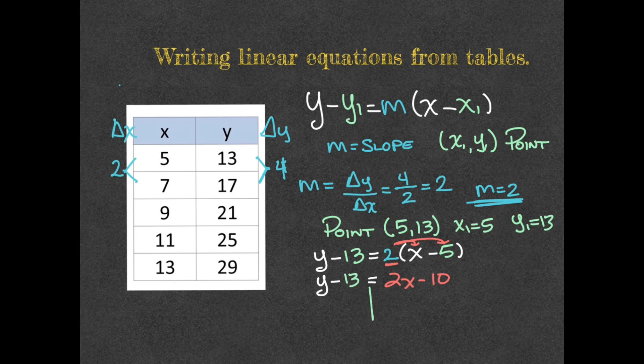I need to solve for y, leave the y alone. How am I going to do that? Well, in this case, I'm going to have to add 13 to cancel the negative 13. And what I do to one side, I do to the other.